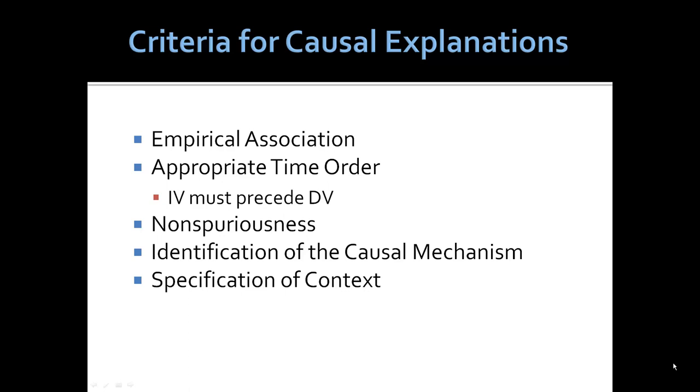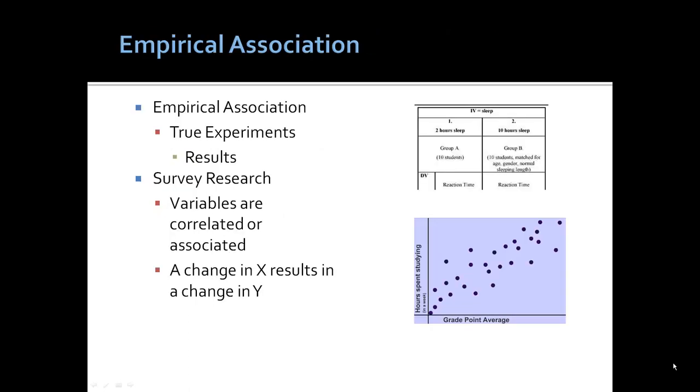Especially in survey research, because we cannot rely on an experimental design to identify the independent variables, it becomes important that we establish strict rules for the assignment of causality. There must be an empirical association. There must be an appropriate time order. That is, an independent variable must precede the dependent variable. The relationship cannot be spurious. It's good if we can identify the causal mechanisms at work. And we need to specify the context in which the causal relationship holds.